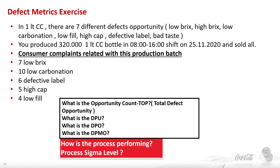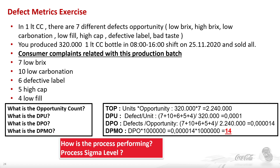So we have to calculate: what is the opportunity count, what is the total defect opportunity, what is the defect per unit, what is the defect per opportunity, what is the defect per million opportunity, and at the end how is the process performing and what is the process Sigma level. The total opportunity count is 320,000 into seven, which equals 2.24 million — that means across all these bottles, we can have seven defects that could be present.